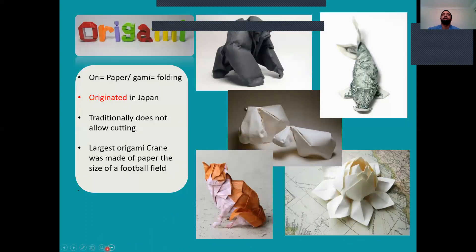Looking back at origami and the questions that we answered, for those who may have got a few questions wrong: origami splits into two words—ori means paper, kami means folding, so origami means paper folding. It originated in Japan and traditionally does not allow cutting, so they just folded. Later on they started to cut it to create more different complicated designs. The largest origami crane was made of paper the size of a football field, which is quite impressive.